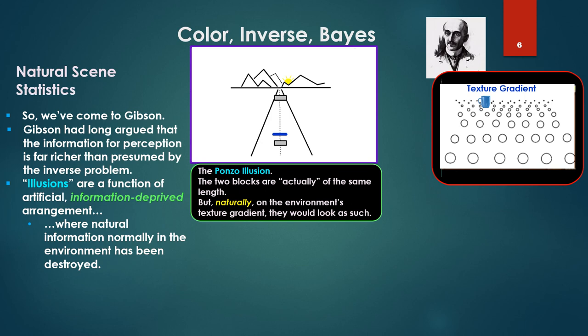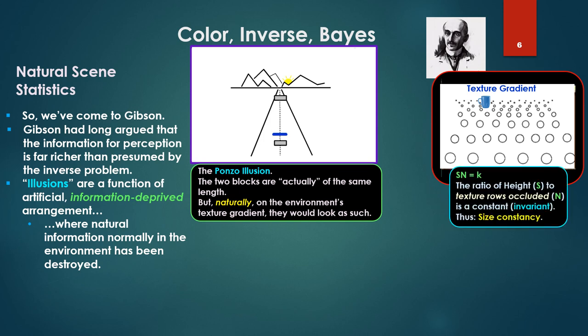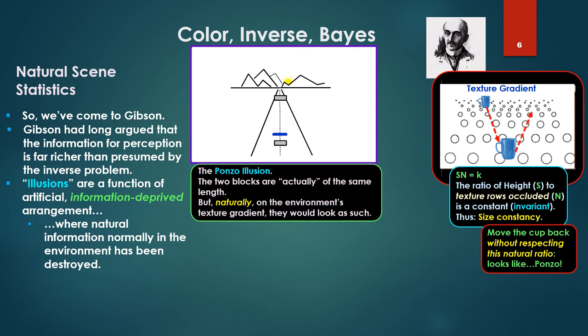But naturally on the environment's texture gradient, they would look the way they appear there. Again we have the texture gradient, rows of texture elements. If we move the cup forward across the gradient, we're maintaining a ratio, the ratio of height S to texture rows occluded, and that's a constant, an invariant. Thus size constancy. Four rows occluded in the back there, just two rows occluded in the front, meanwhile the height doubles. Move the cup back without respecting this natural ratio and it's going to look like the Ponzo illusion.